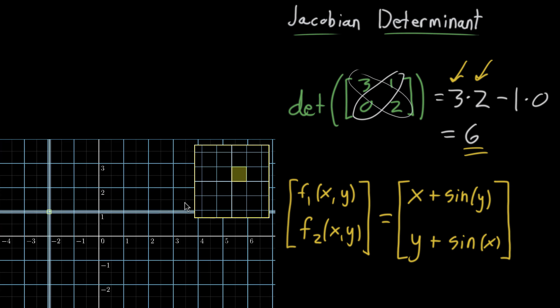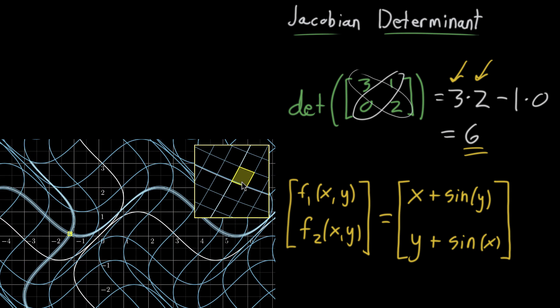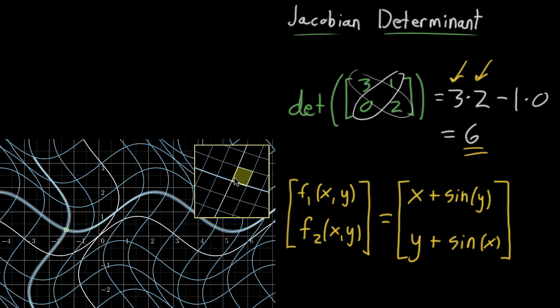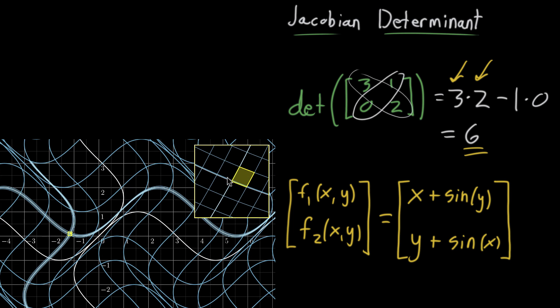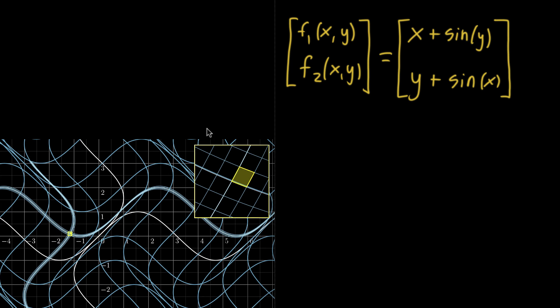So in this particular case, when you play out the animation, areas don't really change that much; they get stretched out a little bit, but it's not that dramatic. So if we know the matrix that describes the transformation that this looks like zoomed-in, the determinant of that matrix will tell us the factor by which areas tend to get stretched out. In particular, you can think of this little yellow box and the factor by which it gets stretched. And as a reminder, the matrix describing that zoomed-in transformation is the Jacobian.